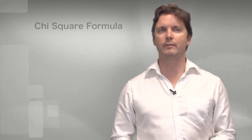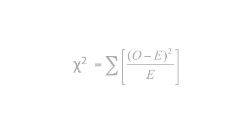So here's a chi-square formula. It reads chi-square equals the sum of each observed minus expected frequency, squared and then divided by the expected frequency.